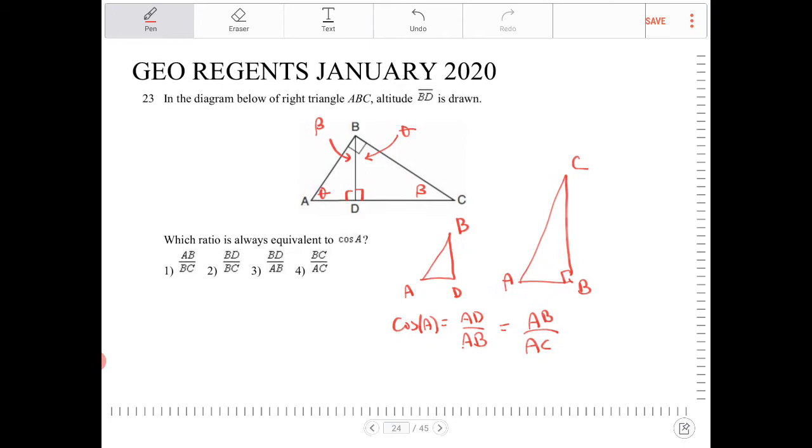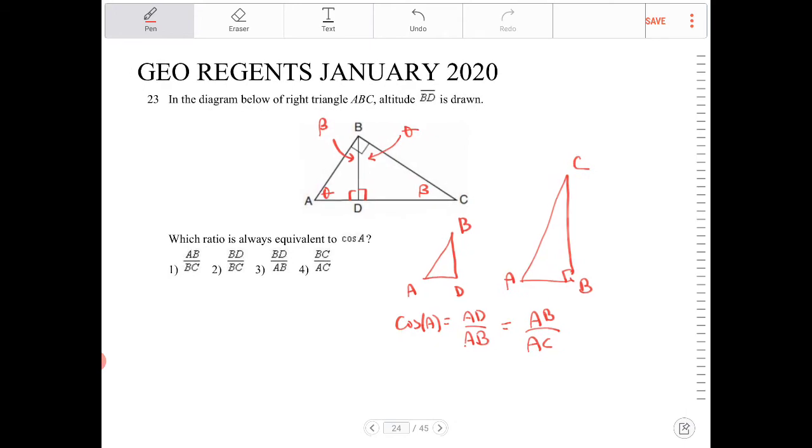AB over AC. And we can also have yet another triangle, the one in the middle. And that would be drawn as B, D, C.